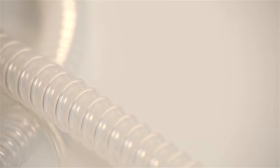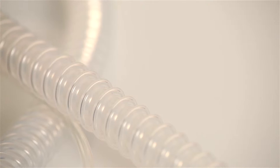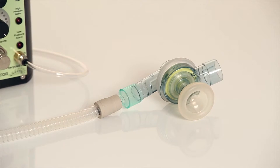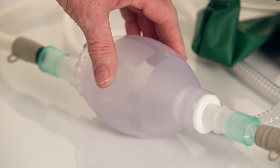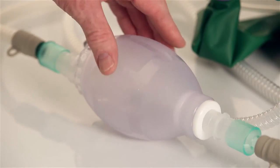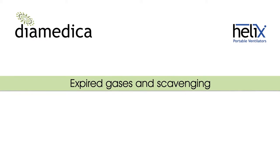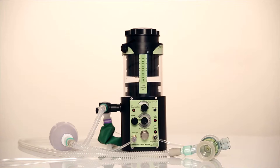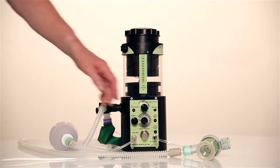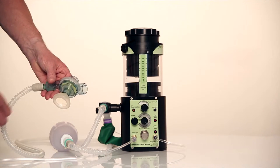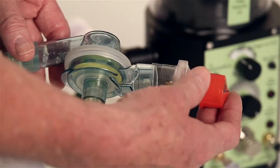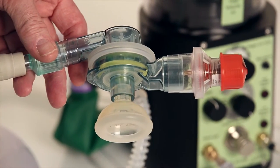The circuit provided is autoclavable silicon tubing with a patient valve at the distal end and a self-inflating bag in the middle to allow manual or assisted ventilation. Expired gases leave the system through the 30mm port on the patient valve, and PEEP or scavenging can be applied at this point.